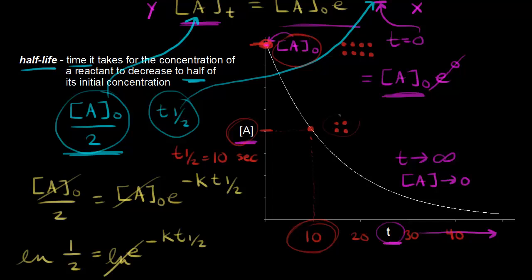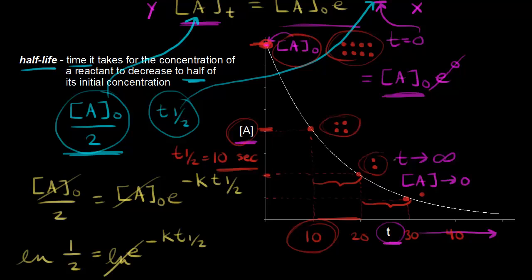So we have four particles now. Half of that reacts and we're left with two. On our graph, this point is half of the previous concentration, so we drop down and find that it took 10 seconds — the same 10 seconds as the first half-life. We can do it again: we lose half of our reactant going from two particles to one particle, and once again it took 10 seconds. So the half-life is once again 10 seconds. It didn't matter if we started with eight particles, four, or two — our half-life was always 10 seconds. This is the idea of half-life for a first-order reaction.